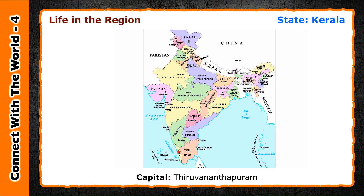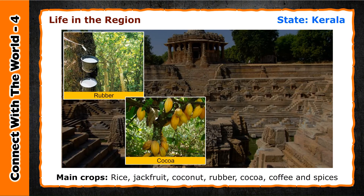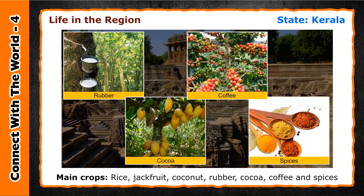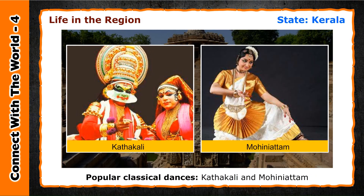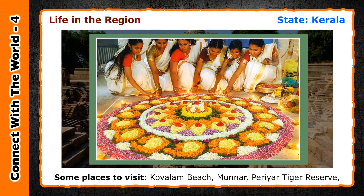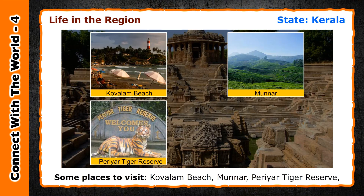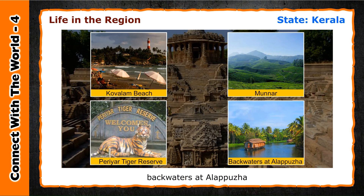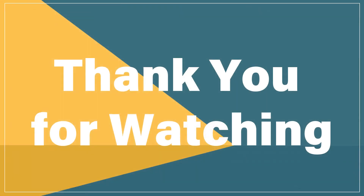State: Kerala. Capital: Thiruvananthapuram. Main language: Malayalam. Main crops: rice, jackfruit, coconut, rubber, cocoa, coffee, and spices. Popular classical dances: Kathakali and Mohiniyattam. Popular festivals: Onam and Vishu. Some places to visit: Kovalam Beach, Munnar, Periyar Tiger Reserve, and Backwaters at Alappuzha. Big cities: Kochi and Kozhikode.